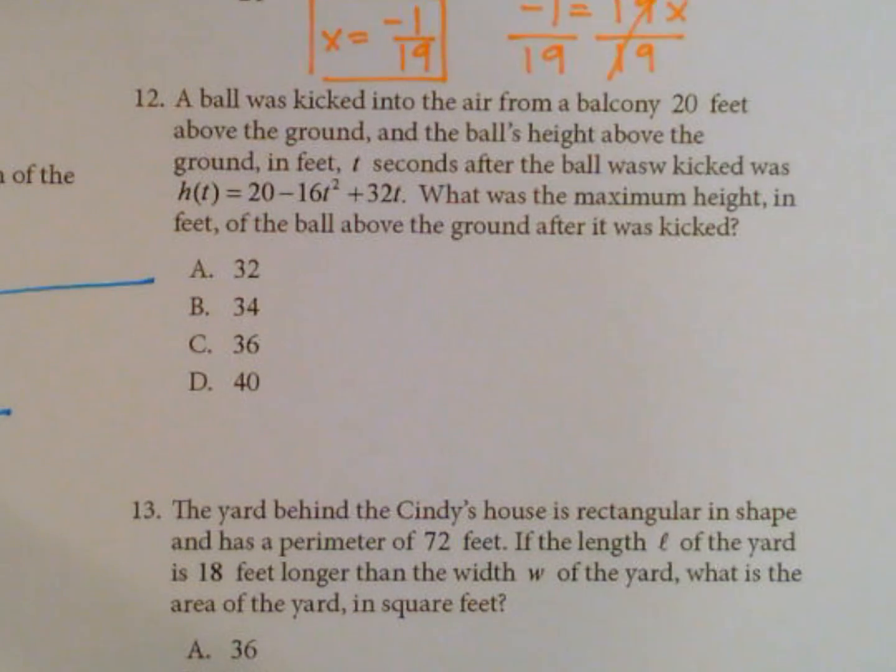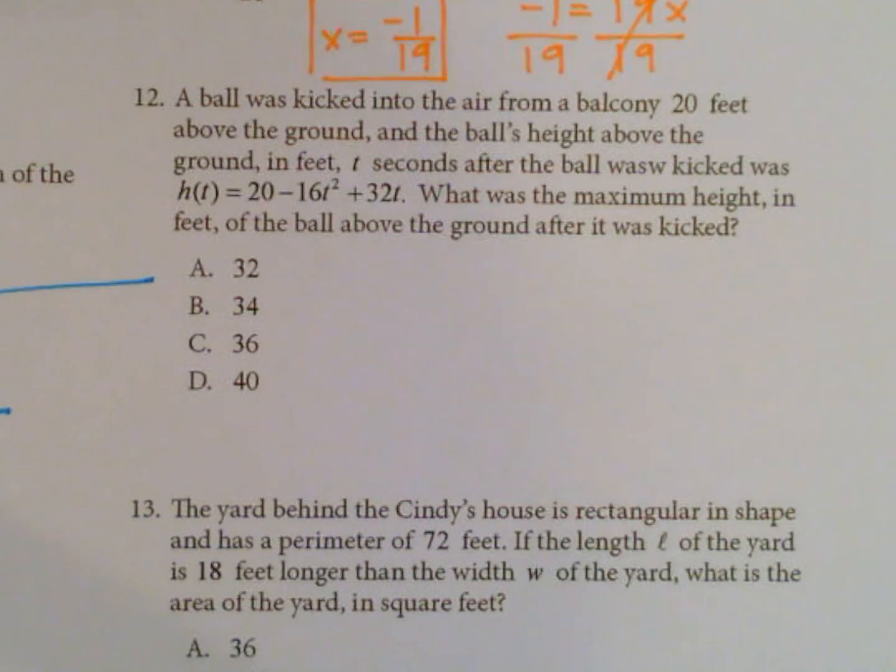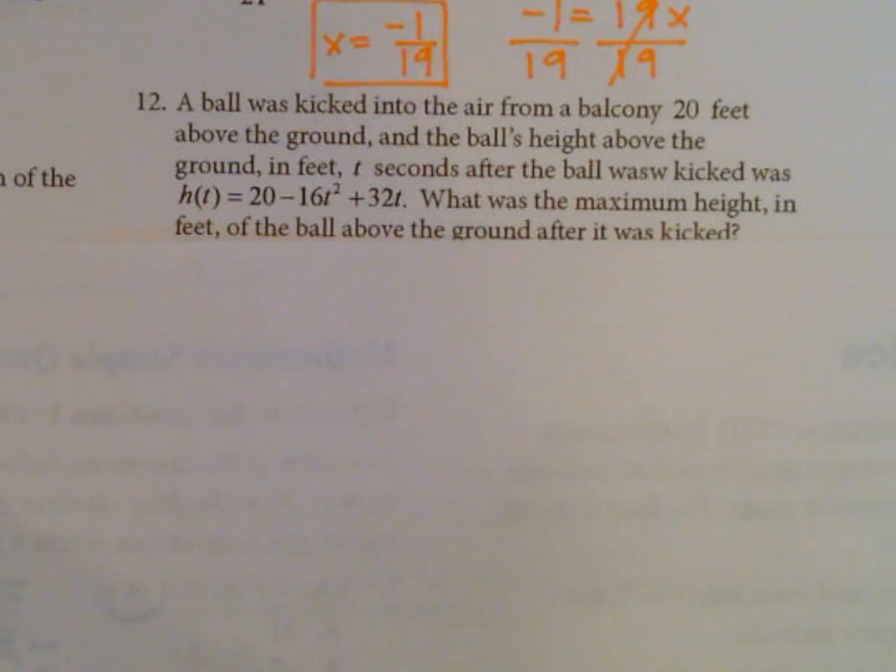Number 12: A ball was kicked into the air from a balcony 20 feet above the ground, and the ball's height above the ground in feet, t seconds after the ball was kicked, was h(t) = 20 - 16t² + 32t. What was the maximum height in feet of the ball above the ground after it was kicked?